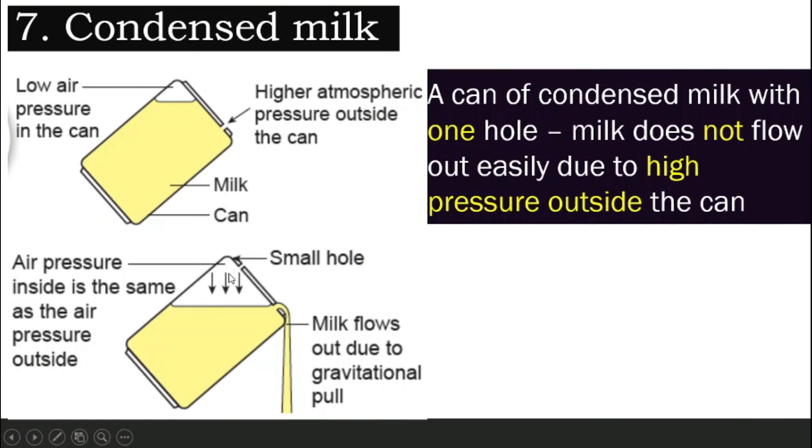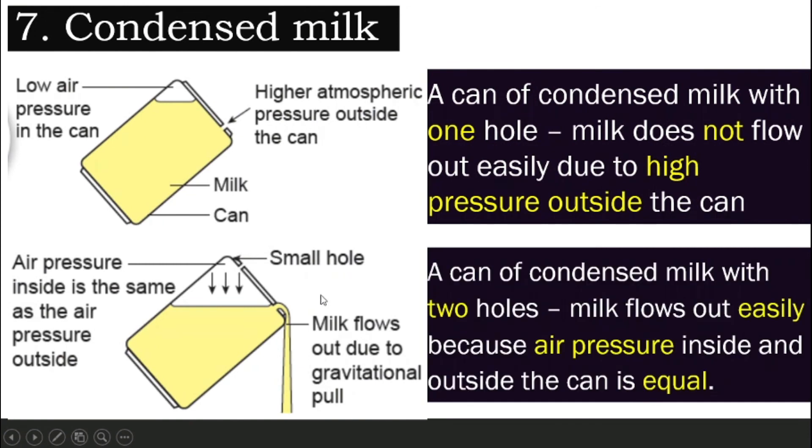You need to open up at least two holes. Why? When you have two holes, as the milk flows out, even if the pressure here becomes lower, the air outside will be pushed in and balance it out. And hence, the air pressure inside and outside now is equal and the milk will have no problem to flow out.